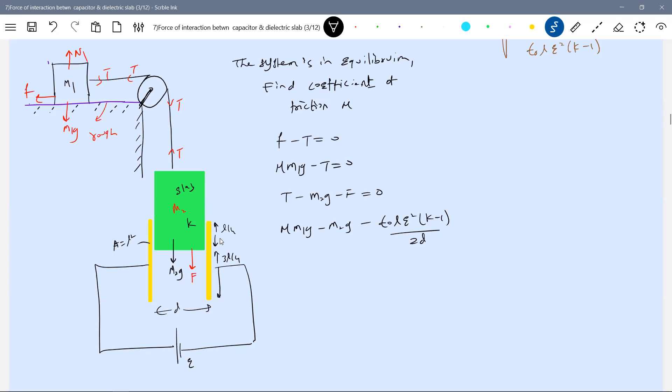So expression for mu will be m2g plus all divided by m1g, or this will become m2 by m1 plus epsilon-0 l E-square (k minus 1) by 2m1gd. This is the expression for mu.